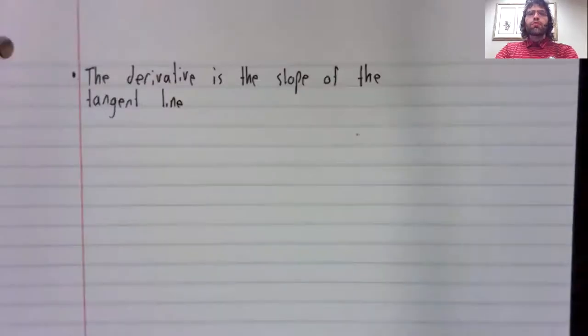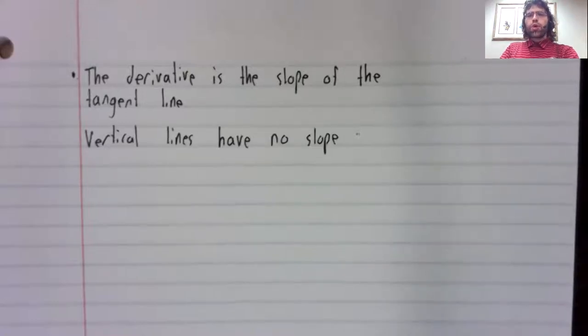Let's start by reminding ourselves that the derivative is the slope of the tangent line, but not every line has a slope. Vertical lines, in particular, have no slope.